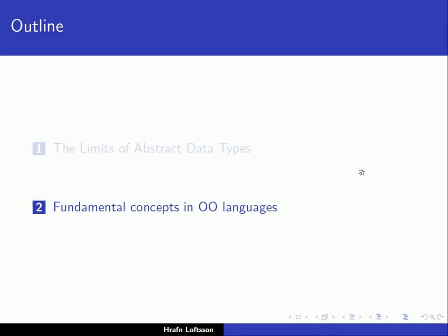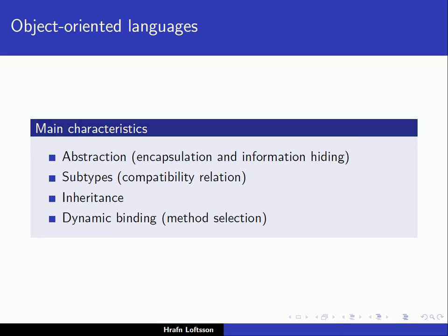We continue our discussion on the object-oriented paradigm and come to the section on fundamental concepts in object-oriented languages. We've already talked about the limits of abstract data types. So what are the main characteristics of object-oriented languages? First, abstraction — we've talked about that in detail. Abstraction entails encapsulation and information hiding. The second point is subtypes, which we talked about a little in the previous lecture regarding the compatibility of types.